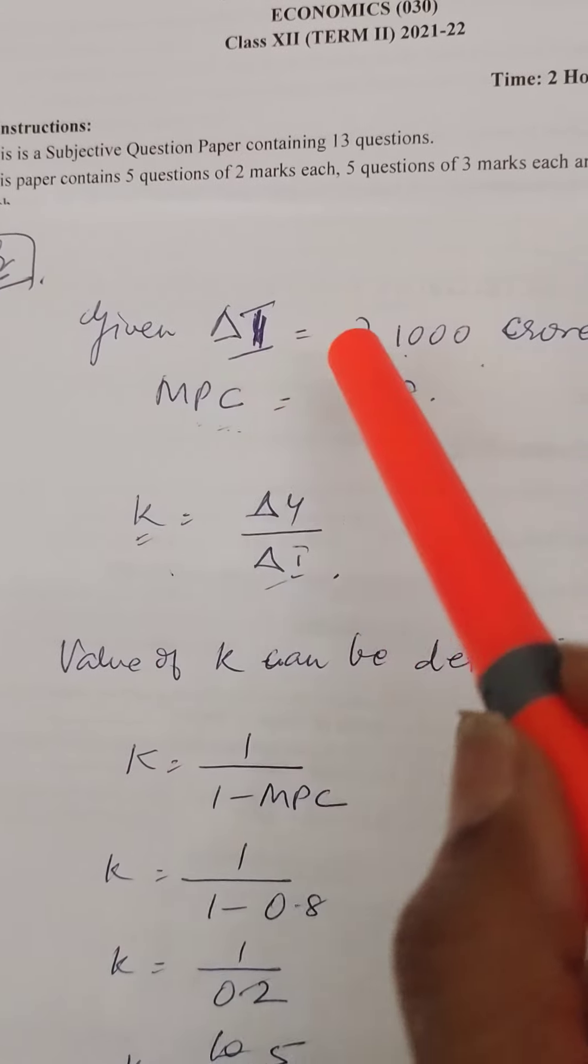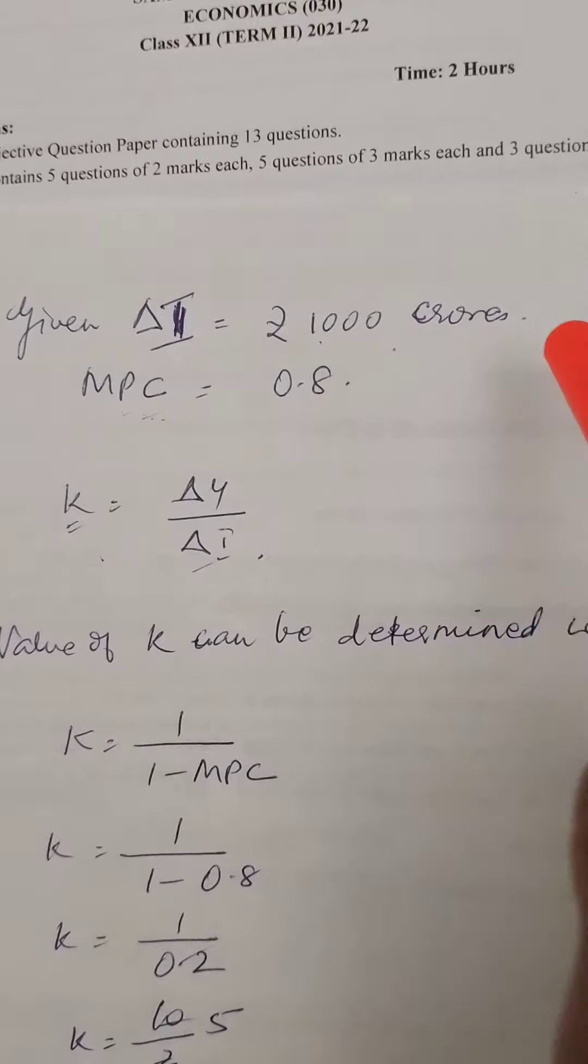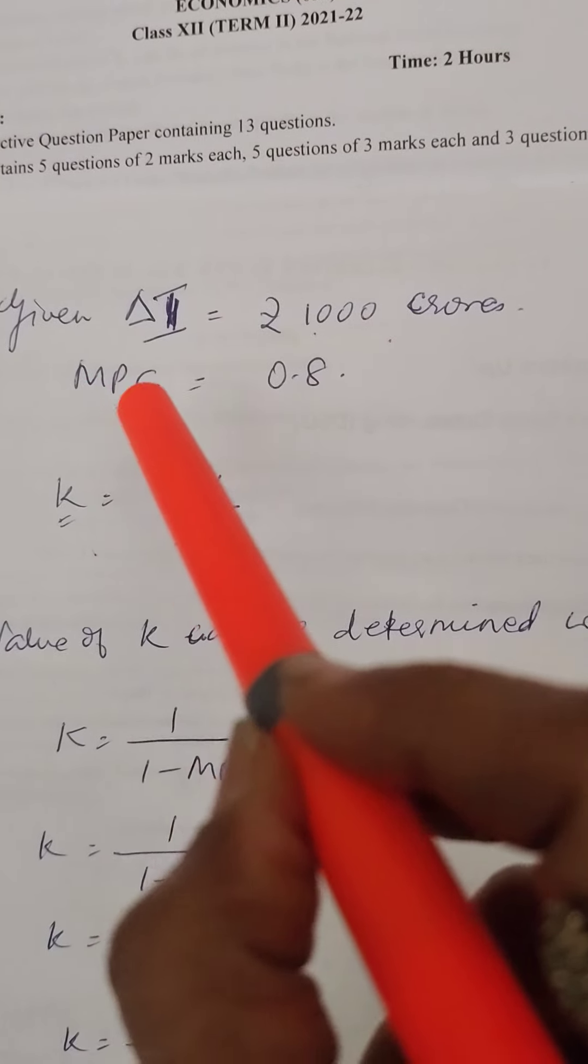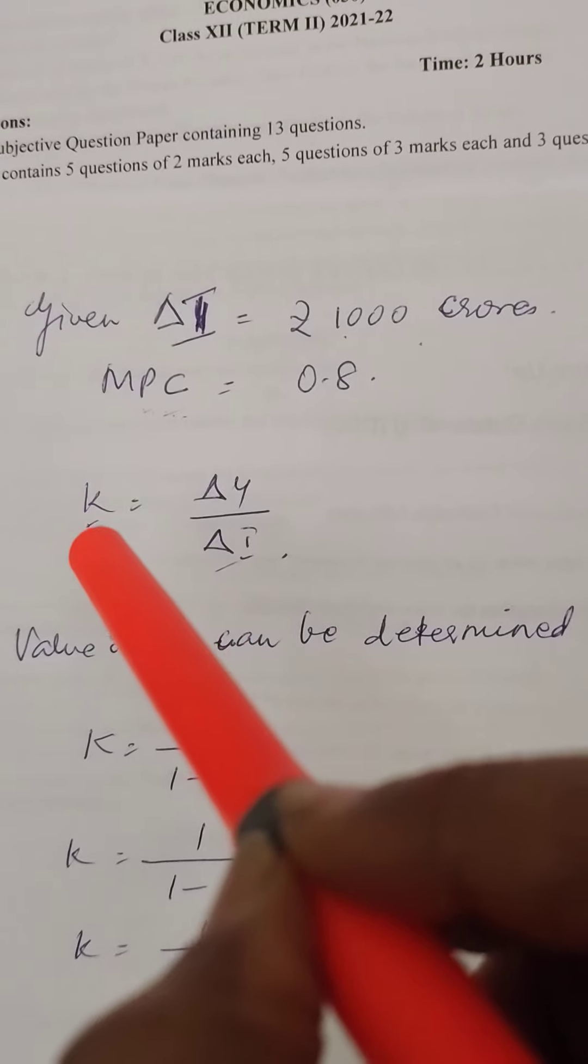Given is change in I (change in investment) = 1,000 crores, and MPC = 0.8. Write down the formula for multiplier.